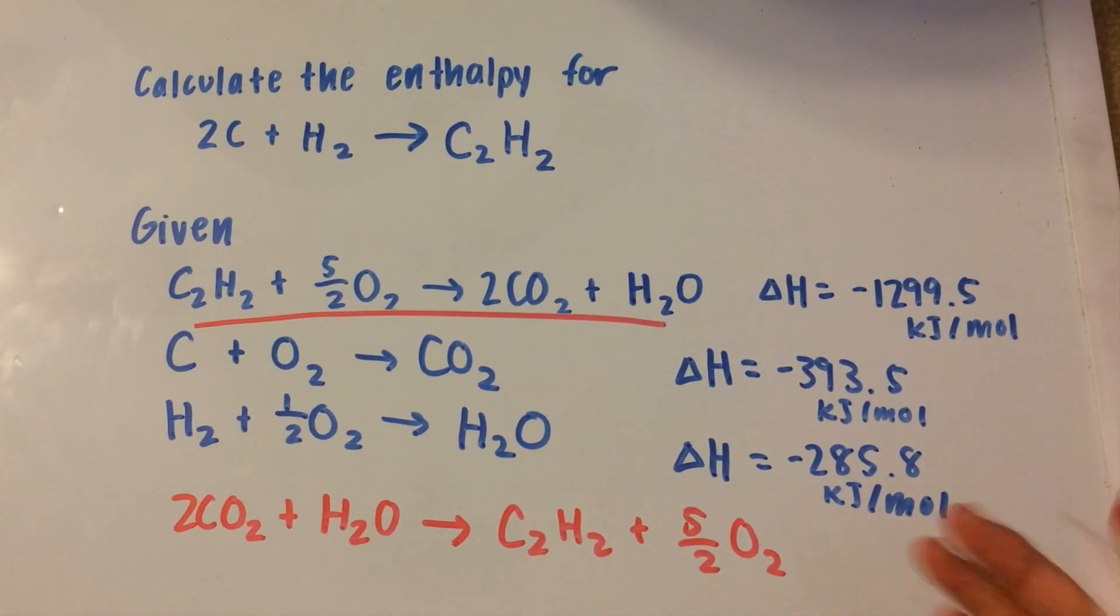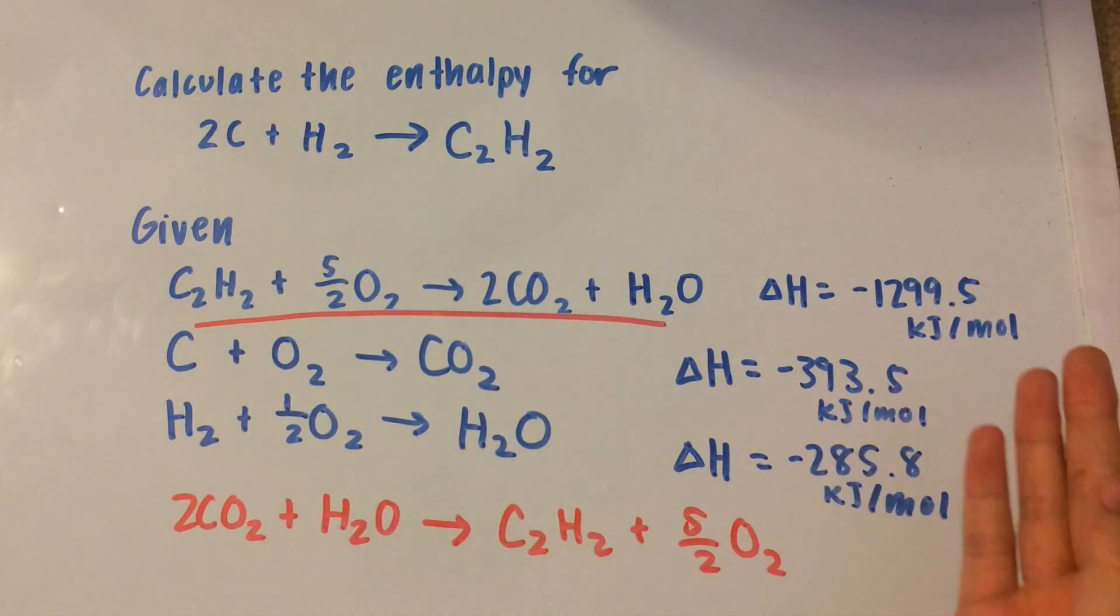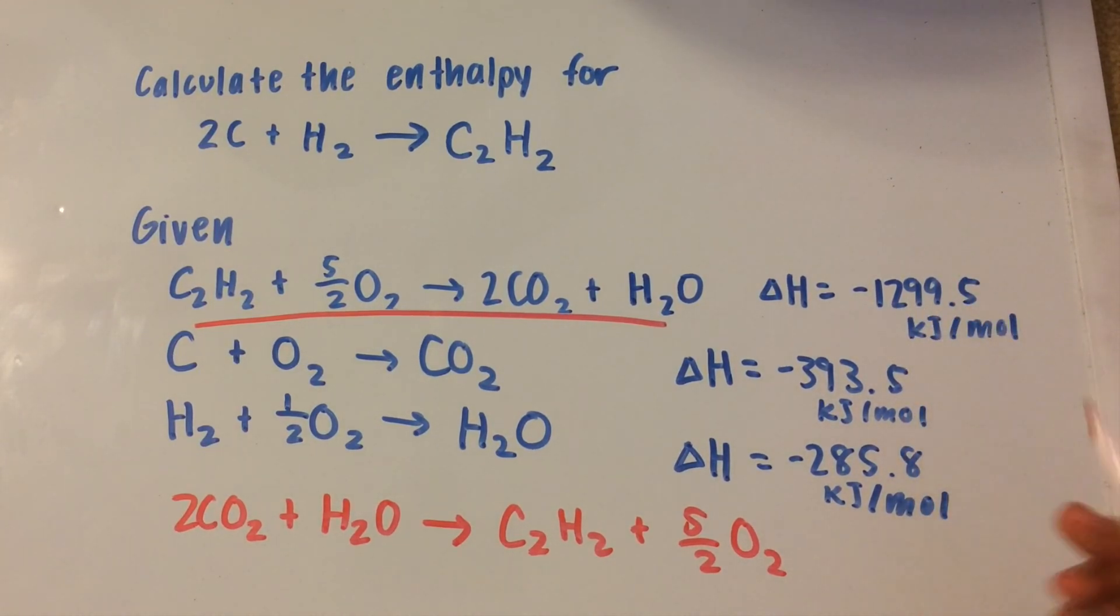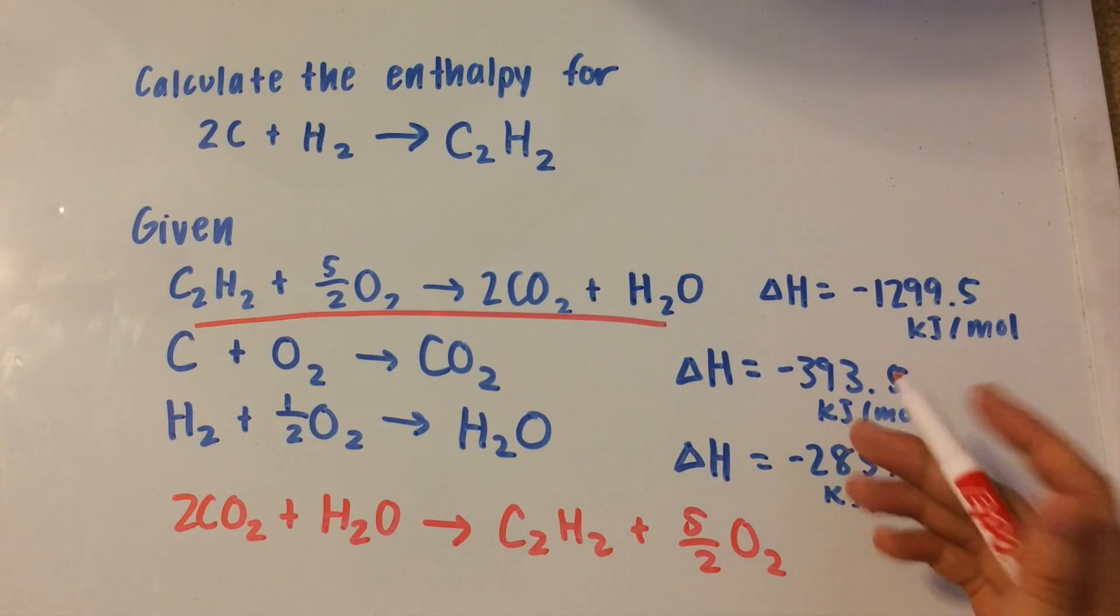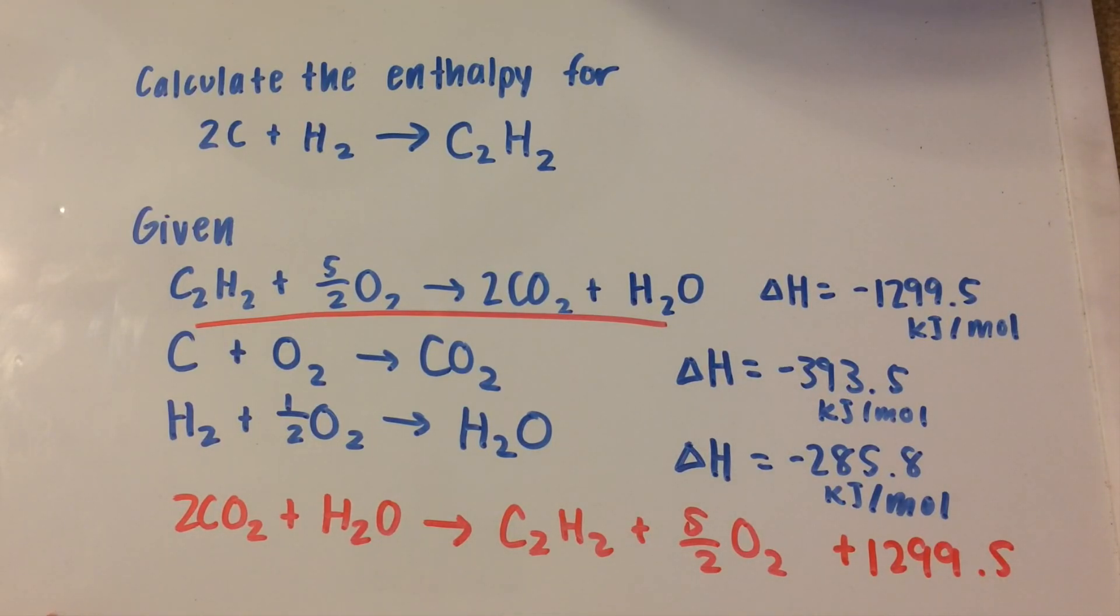And as you can see, I wrote the delta H's on the side, and when we reverse the equation, we need to do the same thing to the delta H, or the enthalpy of the reaction. So instead of a negative 1299.5 kilojoules per mole enthalpy change, we're going to have a positive enthalpy change. So this is going to be positive 1299.5 kilojoules per mole of reaction. And a mole of reaction is just this whole equation right here.